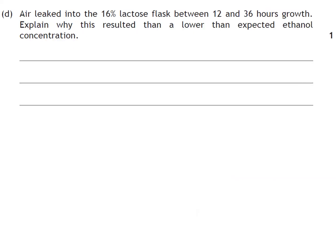Air leaked into the 16% lactose flask between the 12 and 36 hour growth periods. Explain why this resulted in a lower than expected ethanol concentration. Well, if air leaked in, air is about 20% oxygen, which would flip it from using fermentation pathways to aerobic respiration. Aerobic respiration does not produce ethanol — and that's what you need to have got in your answer.